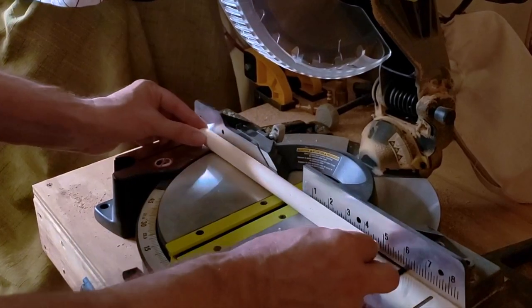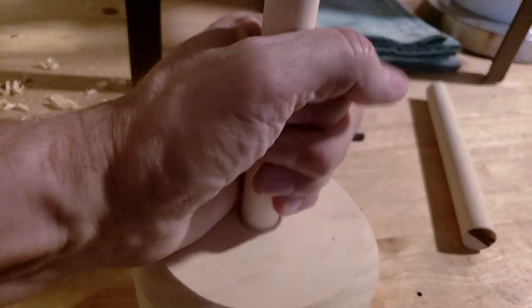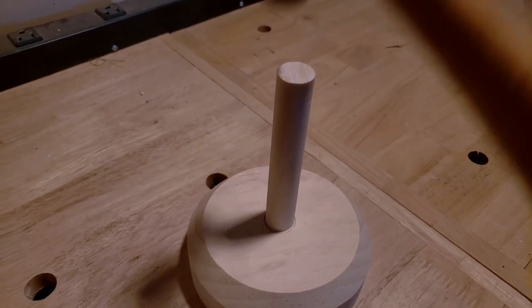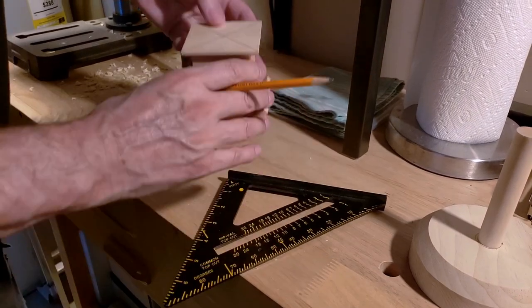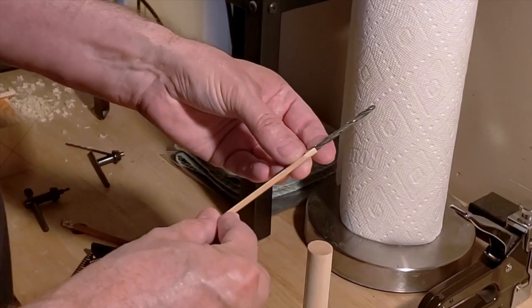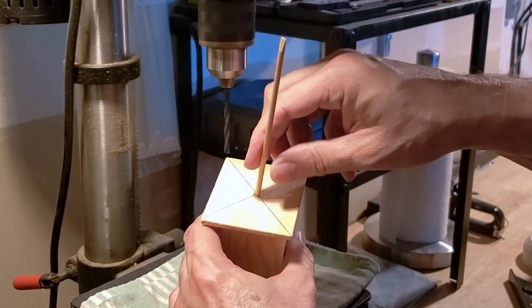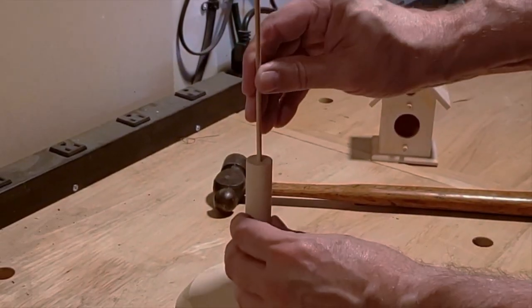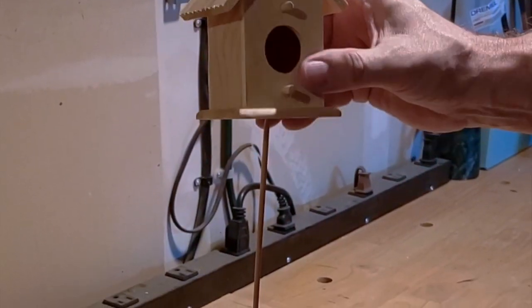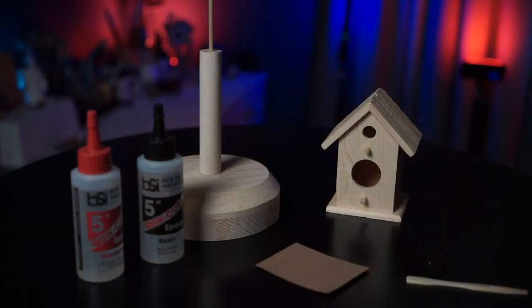We'll make a base and a post for the birdhouse to sit on. Actually it looks more like a paper towel holder. Anyway, we'll drill a hole into the bottom of the birdhouse. Find the right size drill bit and drill away. Make sure the dowel fits. Drill a hole into the post. Put the dowel into the post and then put the house on top of the dowel. So far so good. Now we can move on to gluing everything together.